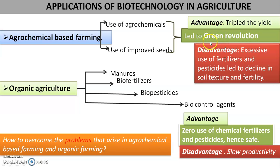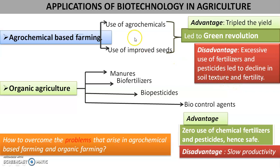Everywhere there was greenery and productivity, and it fulfilled the food demand of the growing population. But it had its own disadvantages. Continuous use of such agrochemicals spoiled the soil texture and fertility. It clogged the soil — too many chemicals, and they are all salts. They started clogging the soil, causing poor aeration and poor porosity. The soil was no longer porous, and the yield became very low. That was the disadvantage of agrochemical-based farming.